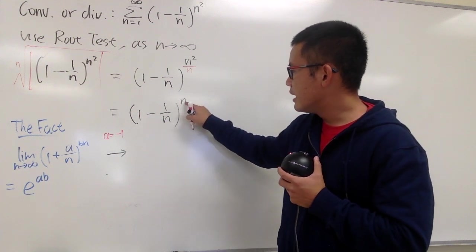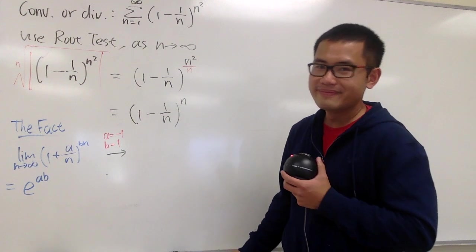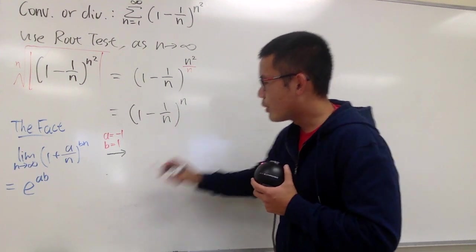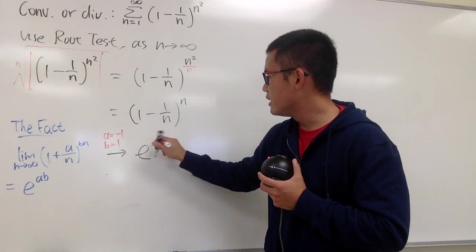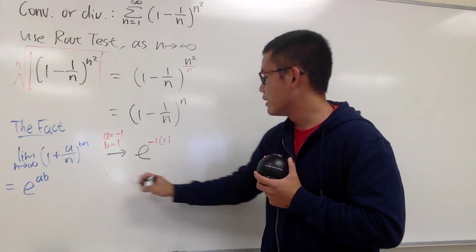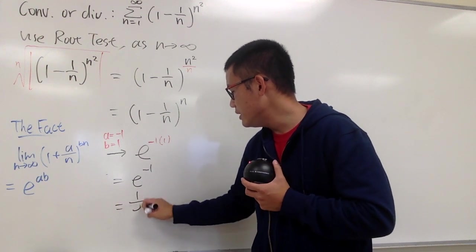And this is n, this is bn, so that means b has to be positive 1. And you know this will approach to e to the ab power. So, it's e to the negative 1 times 1. And you know this is e to the negative 1. And you can write this down as 1 over e. That's pretty much it.